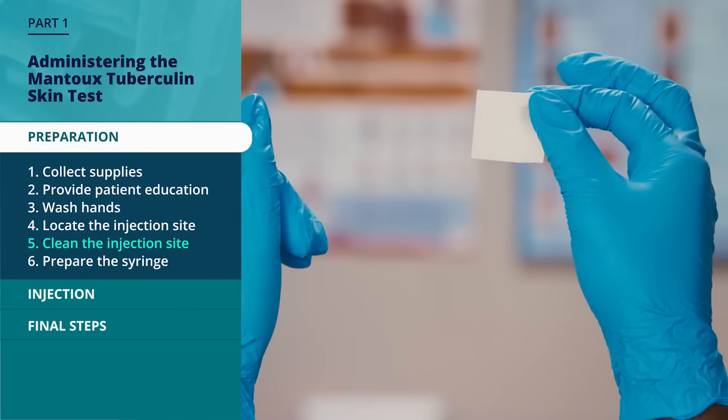In review, remember, when you read the Mantoux tuberculin skin test, you should collect the appropriate supplies, inspect the site, palpate the induration, mark the induration, measure the induration, not the erythema, and record the measurement.